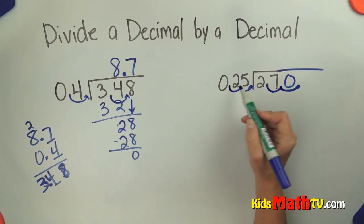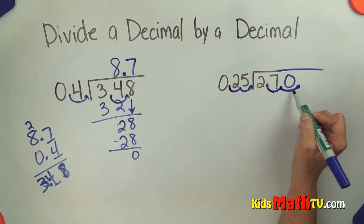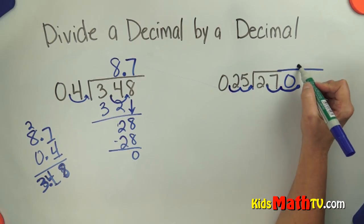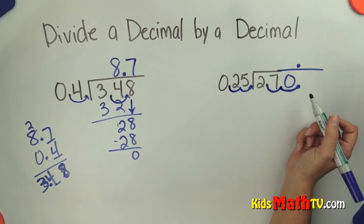So now my decimal is here. I moved it 2 places in my divisor so 2 places in my dividend and bring it straight up. And now I divide.